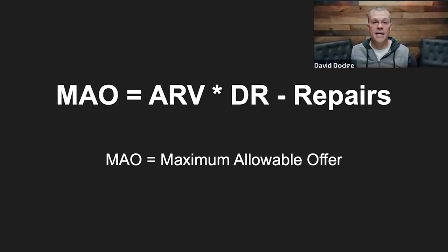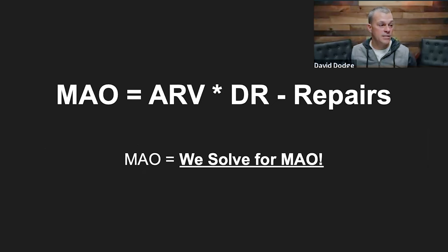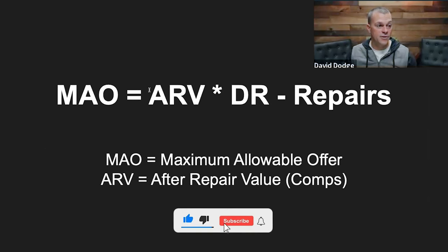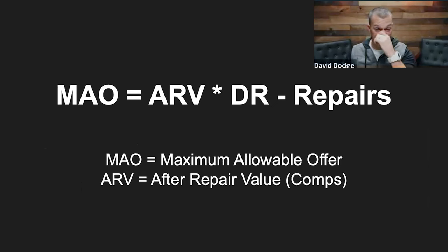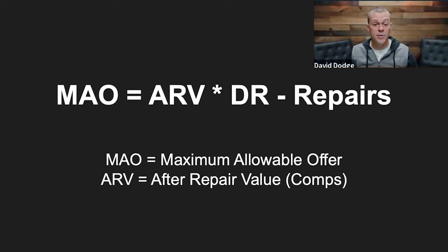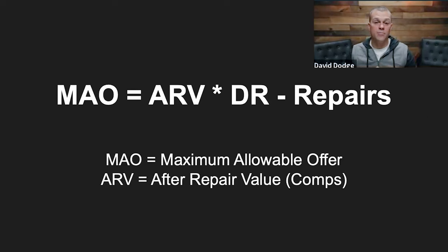So what is the MAO formula? It stands for maximum allowable offer, and we get that using this formula: MAO = ARV × discount rate − repairs. The ARV stands for after repair value, and we get that by running comps. You can use free sites like Zillow or Redfin, but I personally prefer the local MLS. If you don't have access, sites like Batch Leads and PropStream work well — best is MLS, next best is PropStream and Batch Leads, then the free websites.